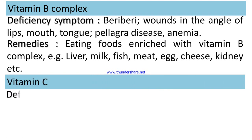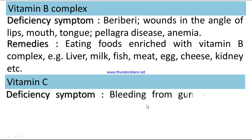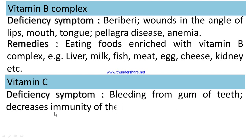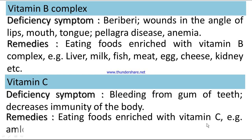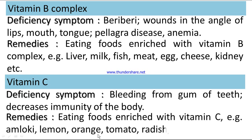Vitamin C — deficiency symptom: bleeding from gums of teeth, decreases immunity of the body. Remedies: eating foods enriched with vitamin C, e.g., almond, lemon, orange, tomato, radish, cauliflower, etc.